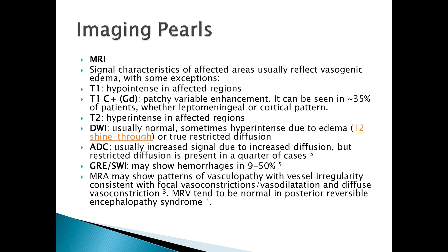Most commonly, PRES involves the parieto-occipital regions, and symmetric involvement is present. On MRI, affected areas usually reflect vasogenic edema. On T1, they appear hypointense, and on T1 post-contrast images, patchy variable enhancement may be present.